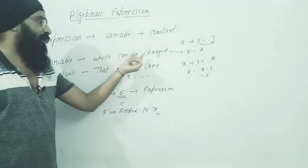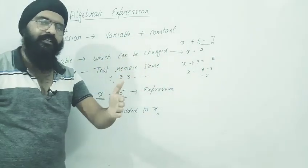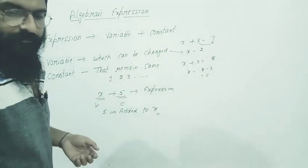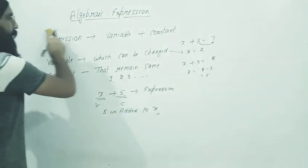First we studied about expression - variable and constant. Variable is something that changes, its value keeps changing. Constant is something that remains same. That is called a constant.